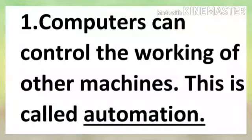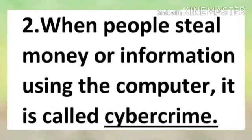Exercise C, fill in the blanks. Number one: computers can control the working of other machines; this is called automation. Number two: when people steal money or information using the computer, it is called cyber crime.